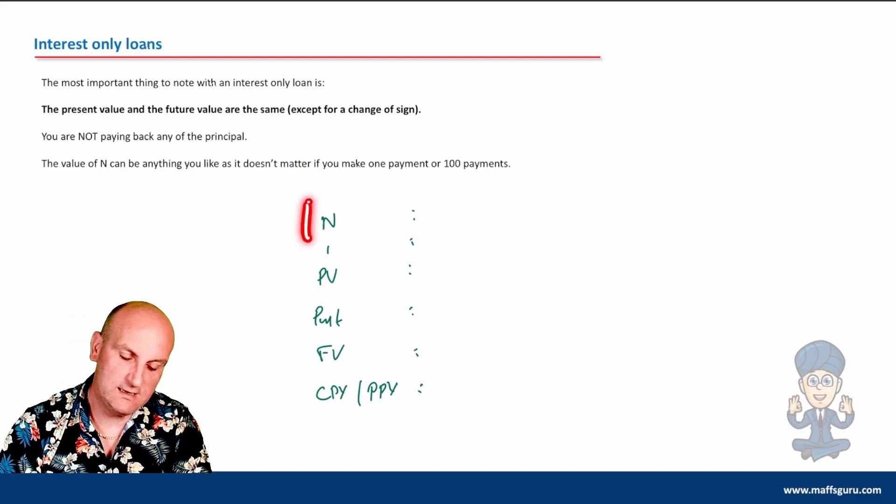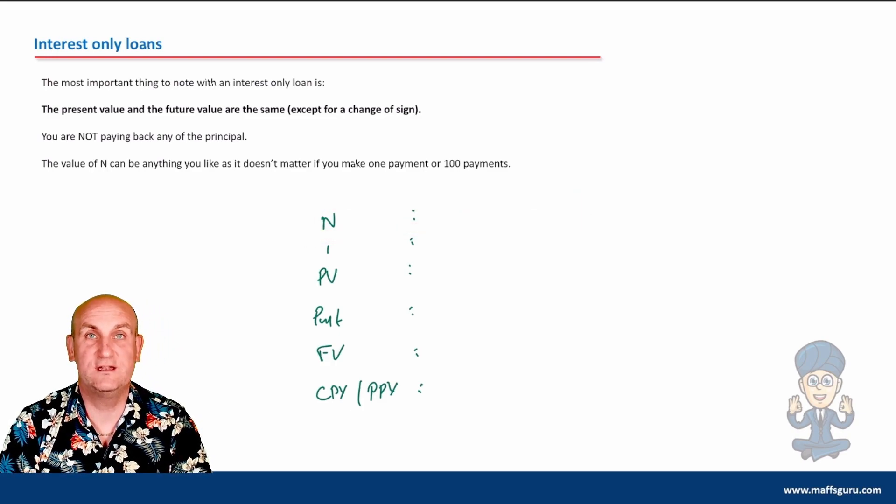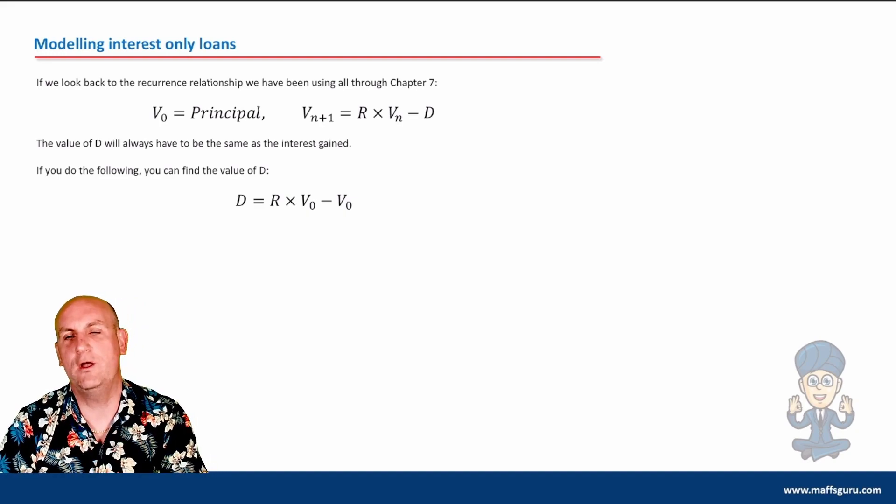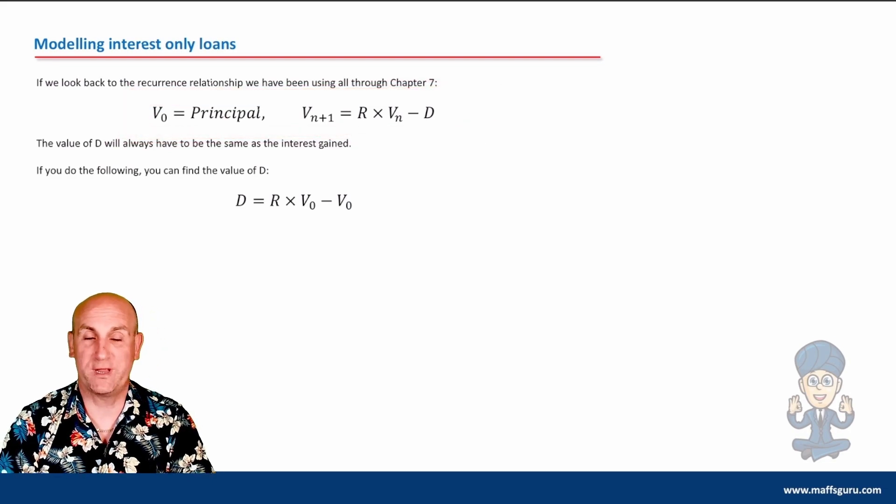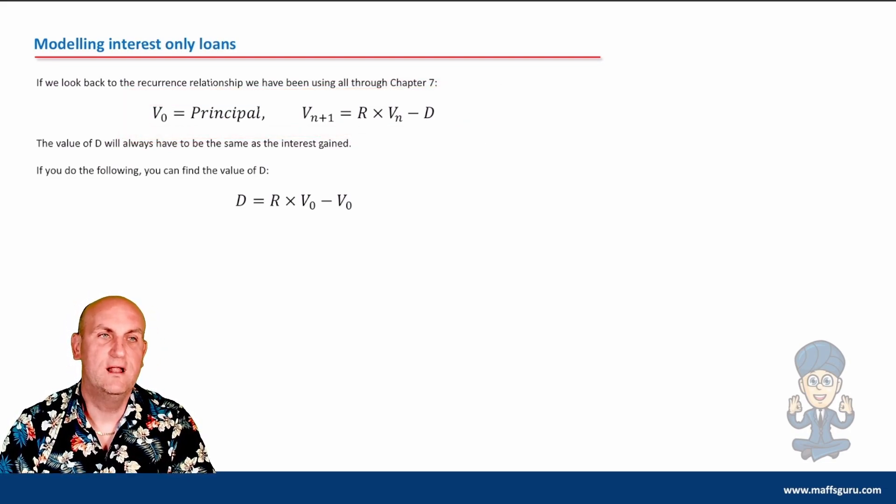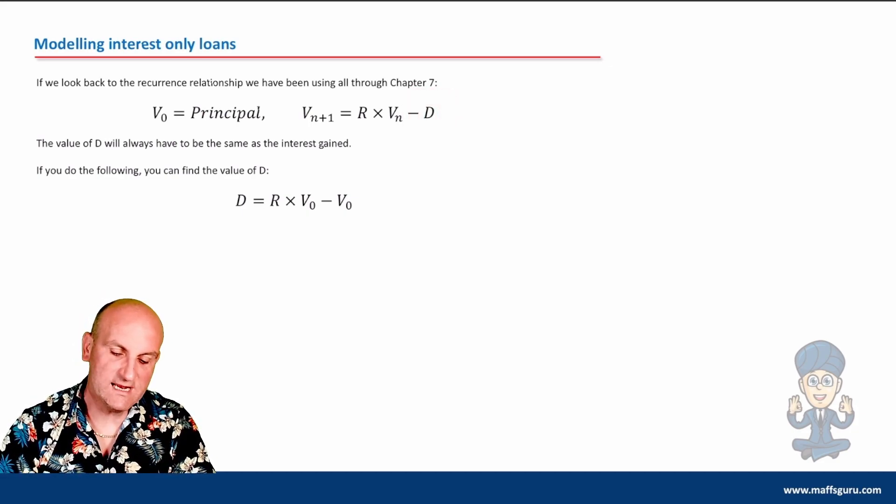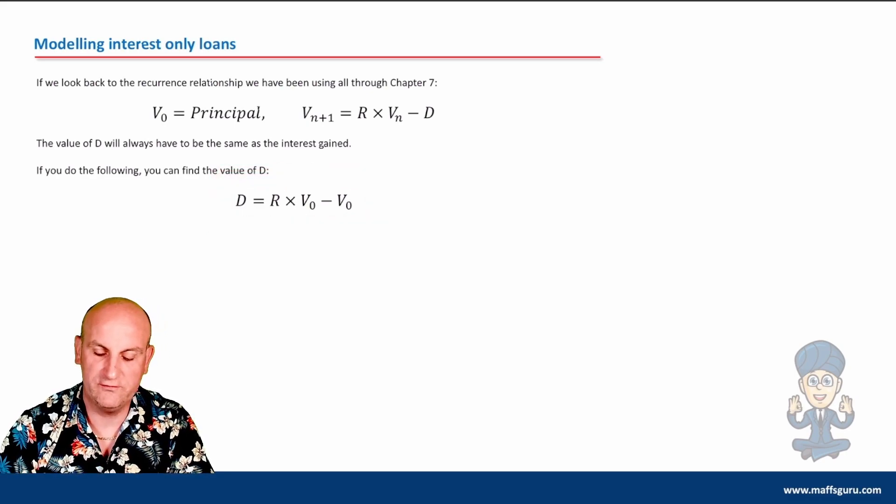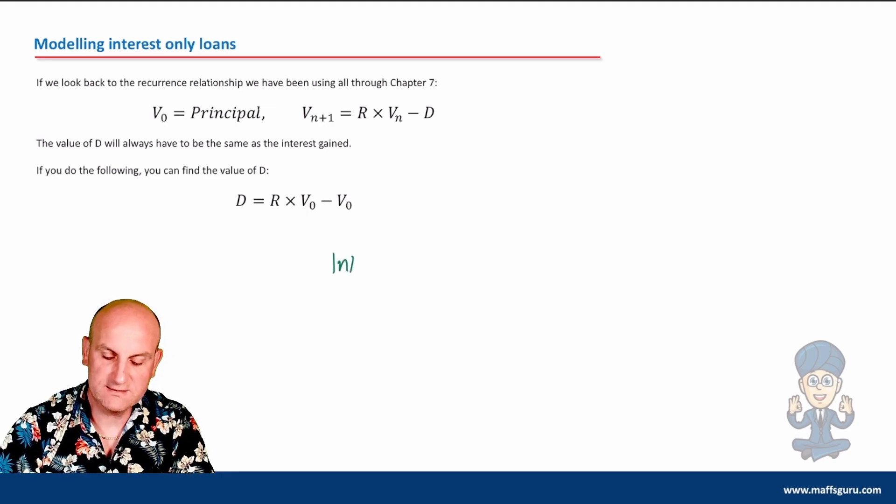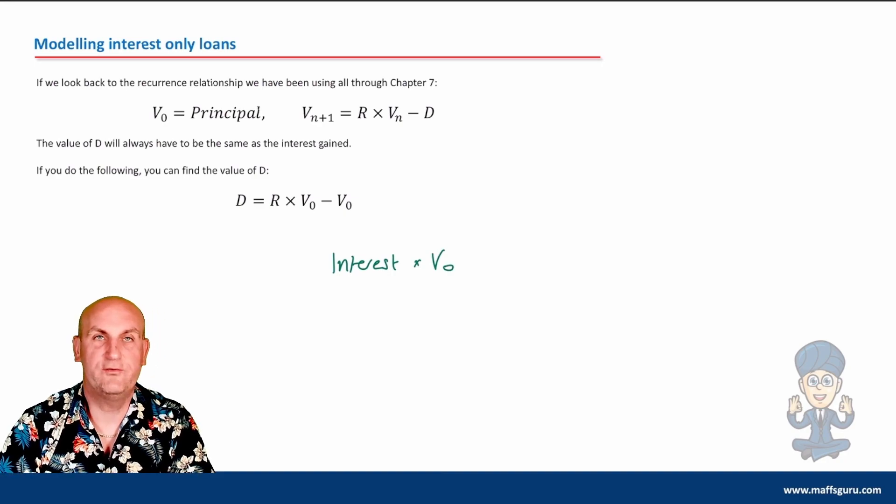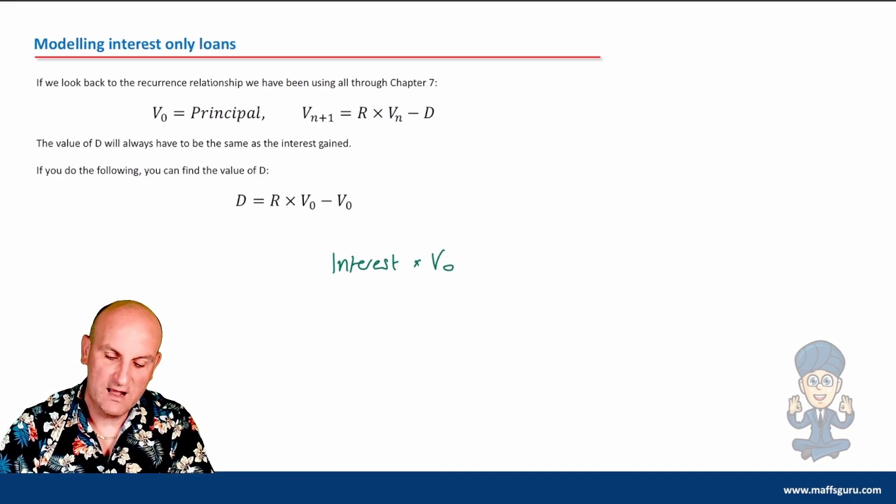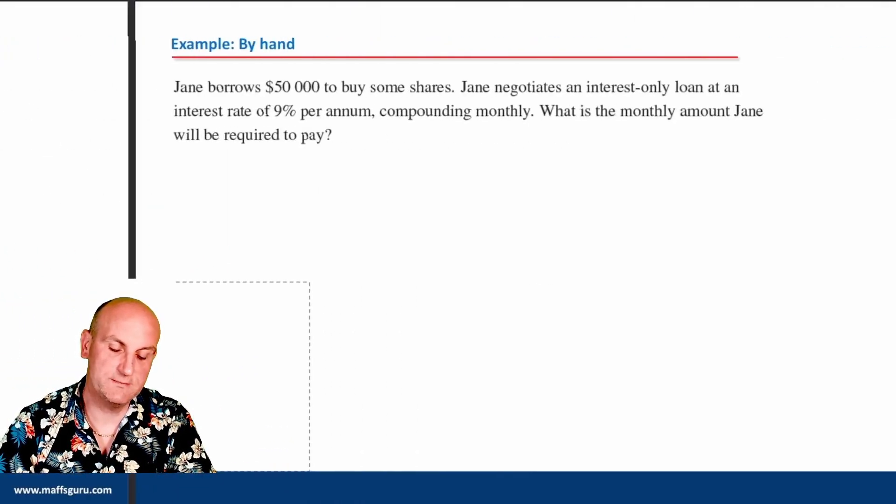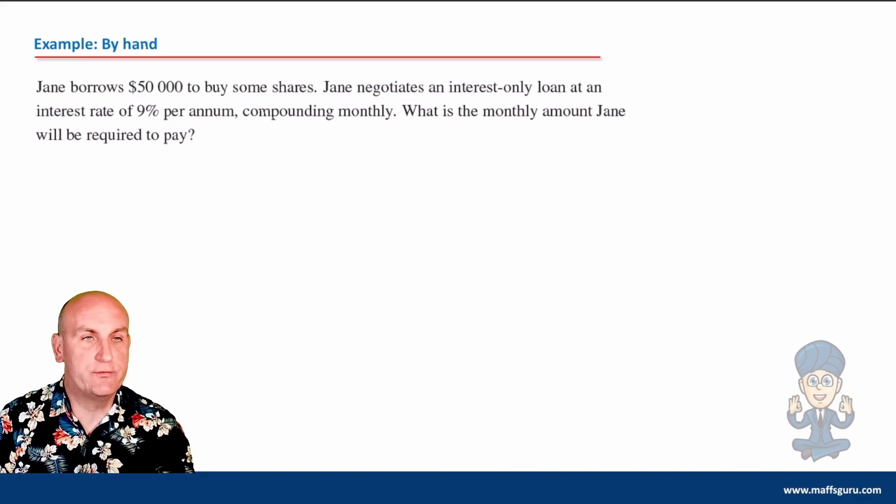If you're paying the interest, it doesn't matter how many payments you make - your principal value and final value aren't going to change. You can make one payment, 10 payments, or a thousand payments. Nothing is going to change. How do we model an interest-only loan? The value of d is actually going to be V0 because we are only paying the interest. I find the interest rate times it by V0, and that's effectively going to be my payment.